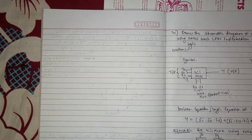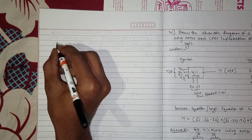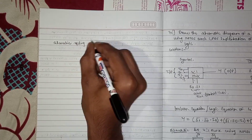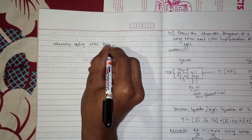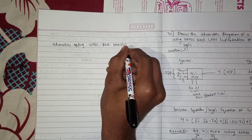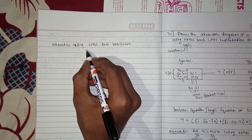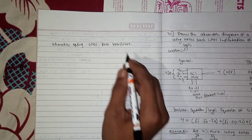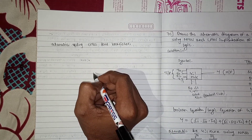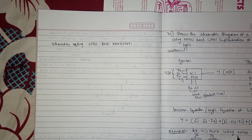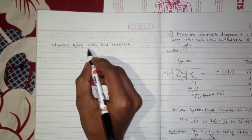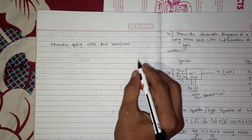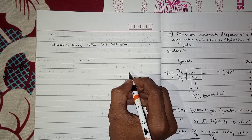Now the schematic using CMOS pass transistors. CMOS pass transistors consist of both NMOS and PMOS. Here they asked using NMOS only; here they say using CMOS transistors, which includes PMOS and NMOS. So we have to draw the 4-to-1 multiplexer using PMOS and NMOS transistors combined.